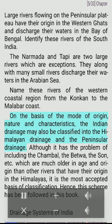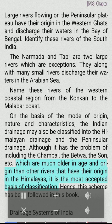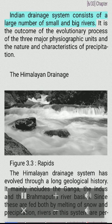On the basis of the mode of origin, nature, and characteristics, the Indian drainage may also be classified into the Himalayan drainage and the peninsular drainage, although this has the problem of including rivers like the Chambal, Betwa, and Son, which are much older in age and origin. Nevertheless, it is the most accepted basis of classification and has been followed in this book. The Indian drainage system is the outcome of the evolutionary process of the three major physiographic units and the nature of precipitation.